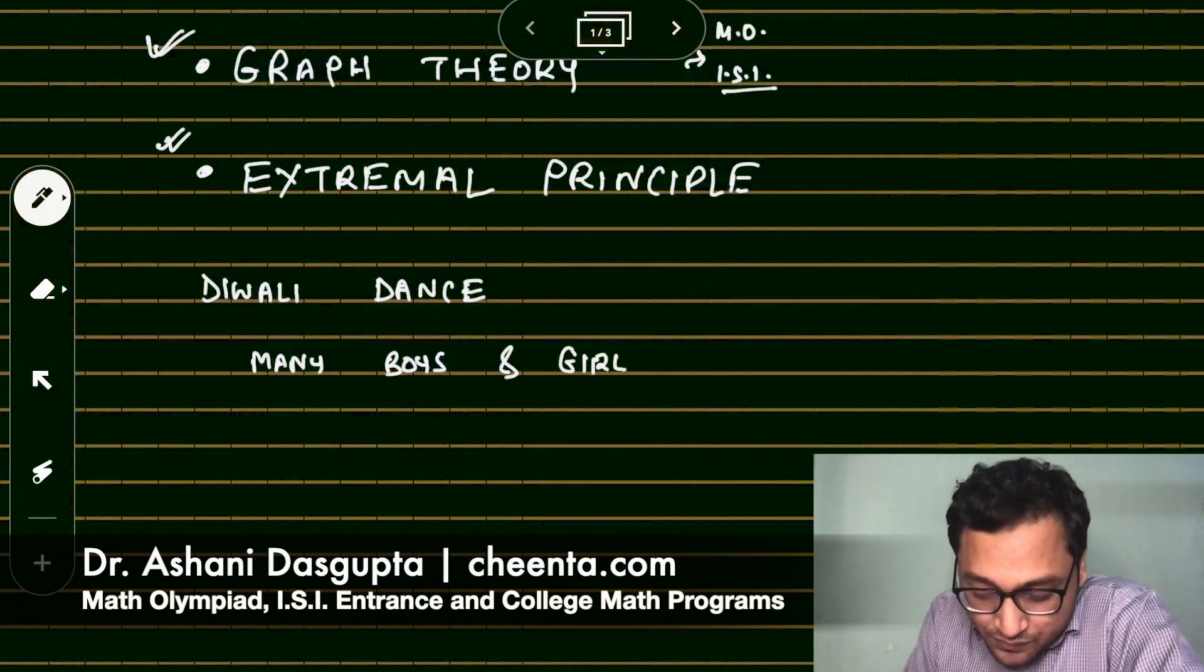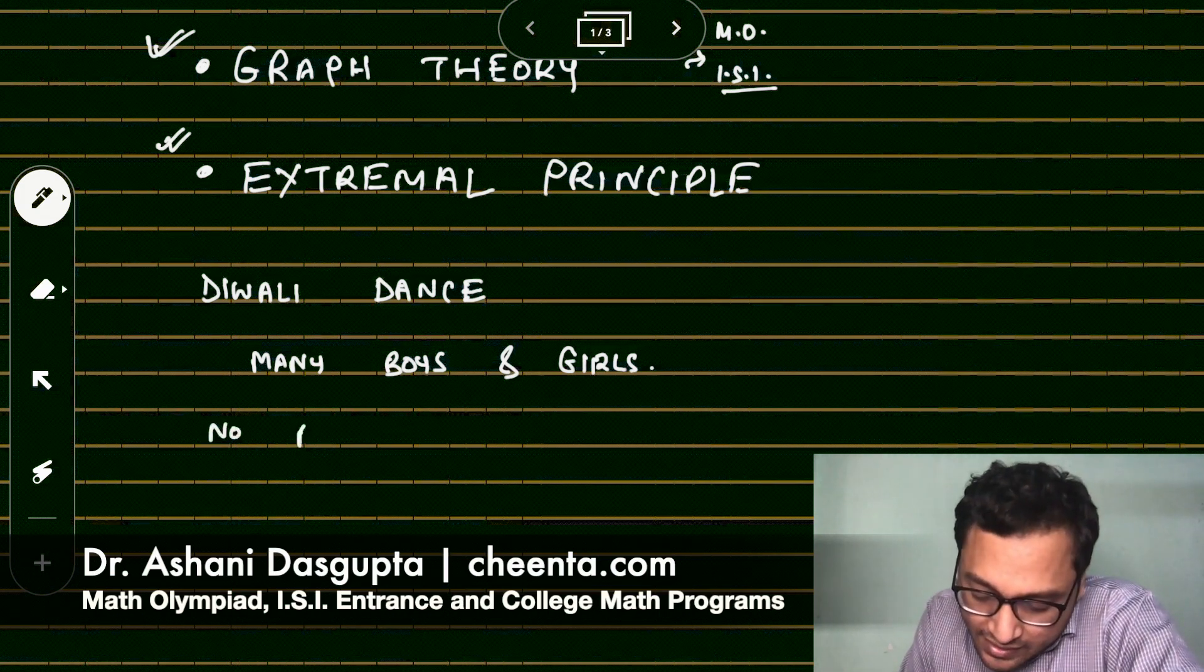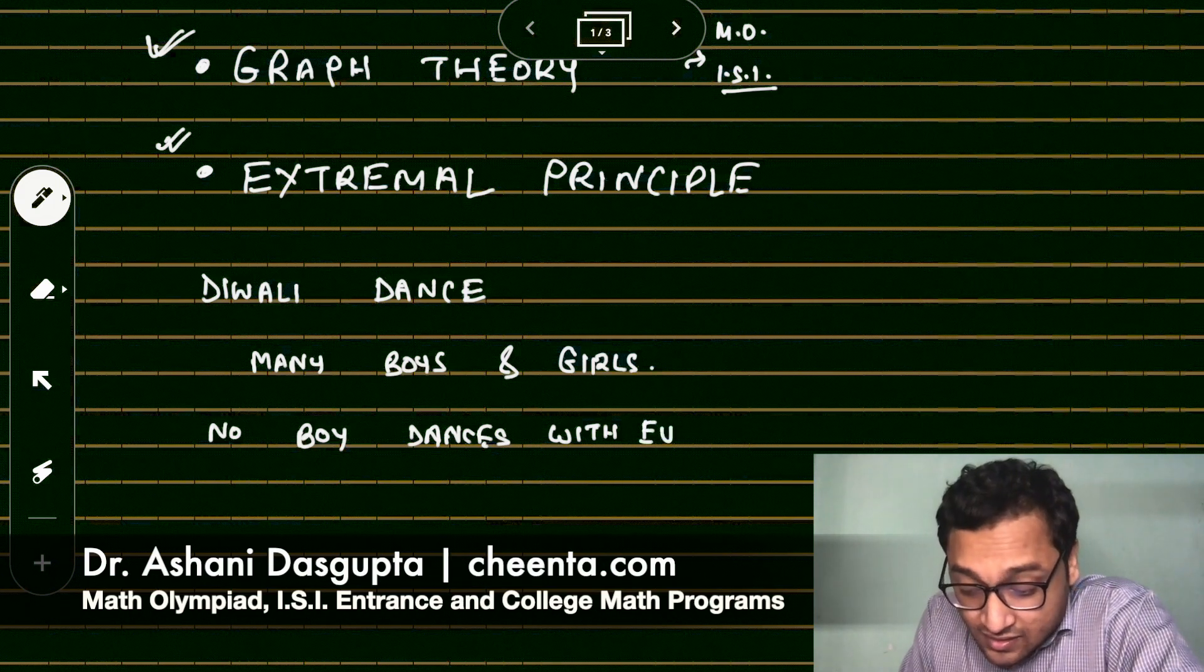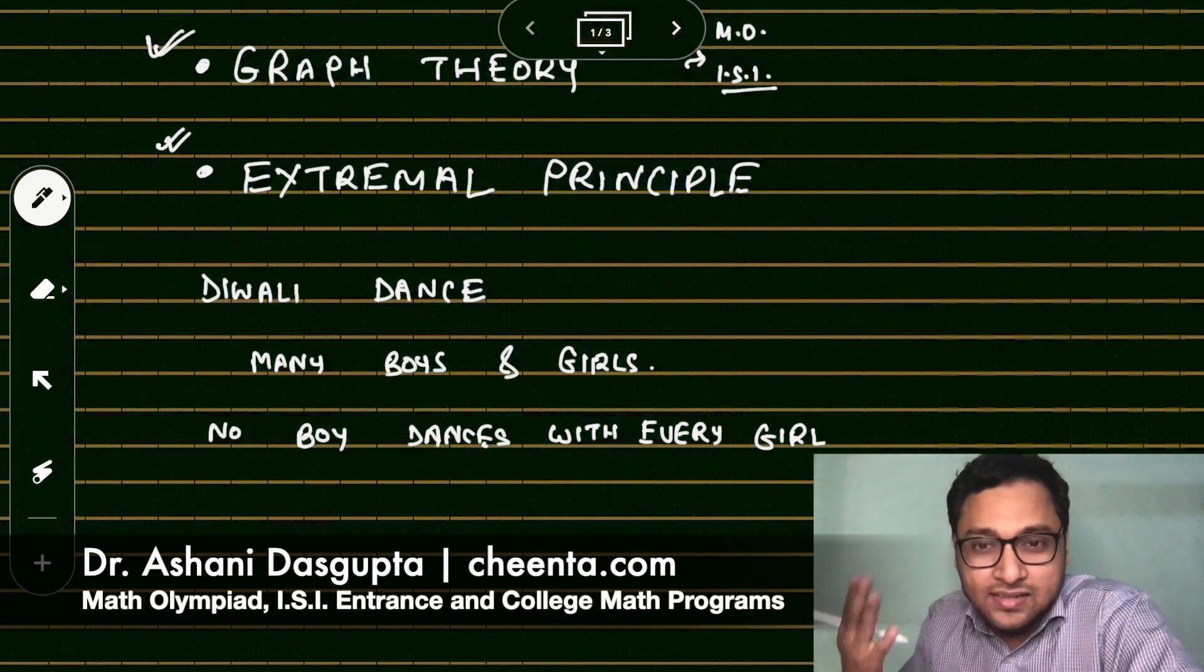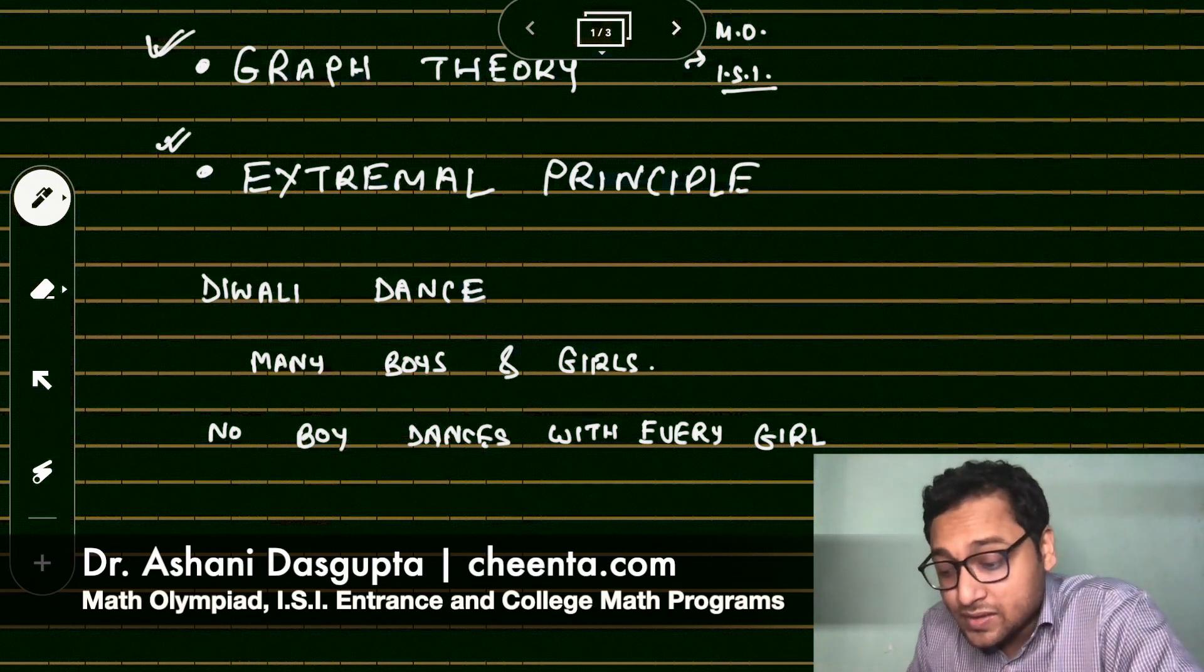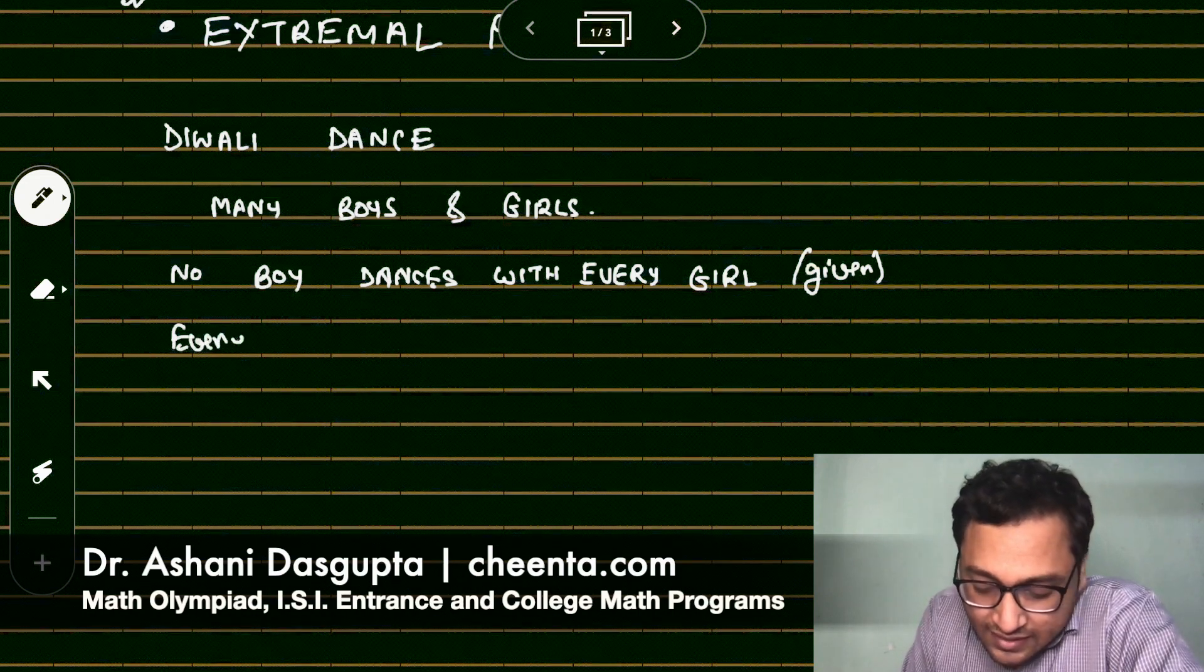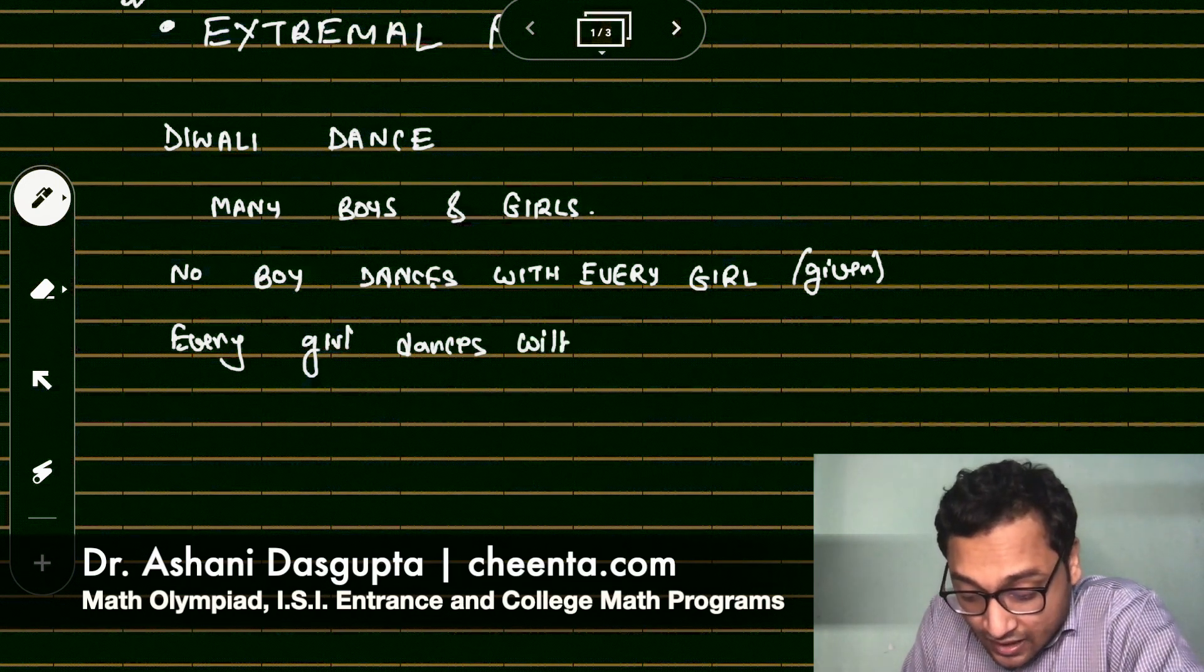It is given that no boy dances with every girl. So they are dancing by turn. So maybe one girl can dance with multiple boys and one boy can dance with multiple girls and so on. So no boy dances with every girl. That is given.